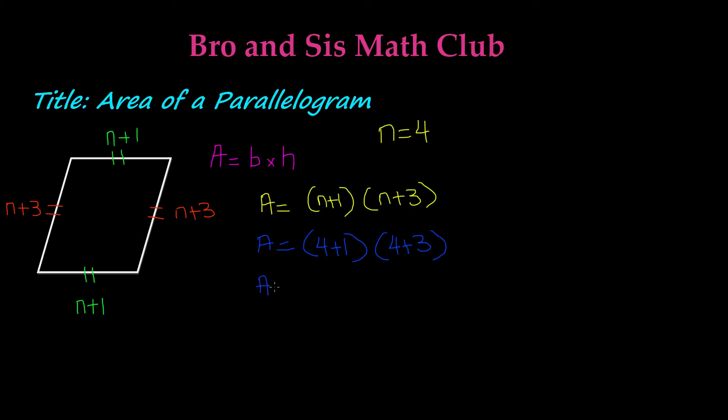So we know that 4 plus 1 is 5, times 4 plus 3 is 7. So that means the area of this parallelogram is 35. And let's say that this was in centimeters, so it would be 35 centimeters squared.